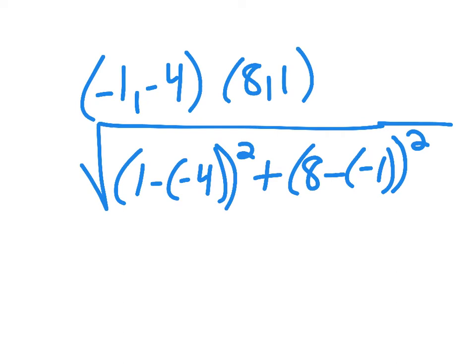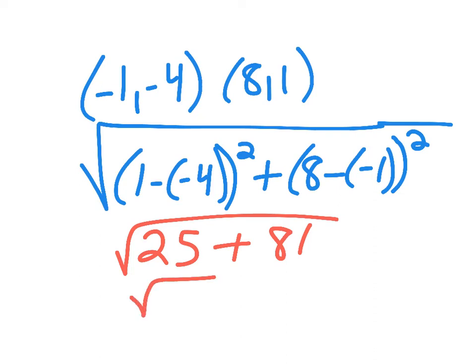So 1 take away negative 4 is 5, 5 squared is 25, plus 8 minus negative 1 is 9. When I square that, I end up with 81, and I have to square root all this. 25 plus 81 is 106, so I have the square root of 106.